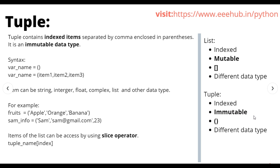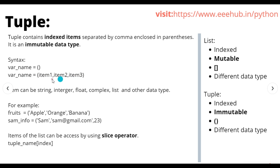All the items of the tuple are enclosed inside open and close parentheses. The tuple contains indexed items, so each item in the tuple has an index starting from 0, 1, 2, and so on. Items of the tuple are separated by commas and enclosed inside parentheses. Tuple data type is immutable, so you can't change any item in the tuple once it is created.